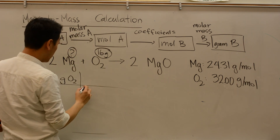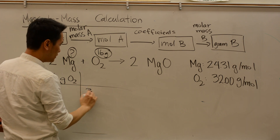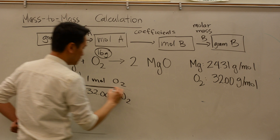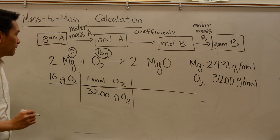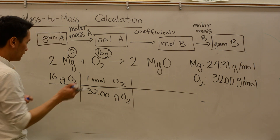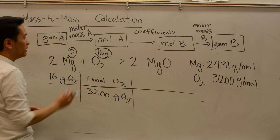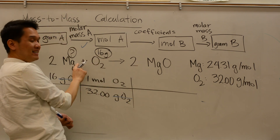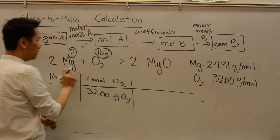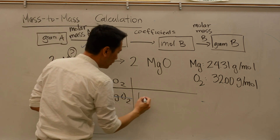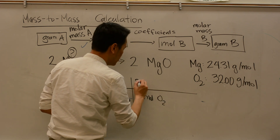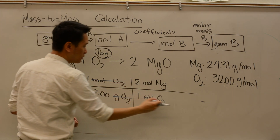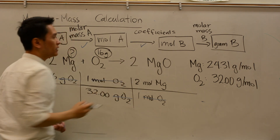First, grams of A to moles of A using the molar mass. The molar mass of O2 is 32.00 grams of oxygen per one mole of oxygen. Unit analysis shows grams of oxygen cancel out. Now we have moles of oxygen and need to go to moles of magnesium. Using the coefficients, the relationship is two to one — so for every one mole of oxygen, we need two moles of magnesium. Moles of oxygen cancel out.